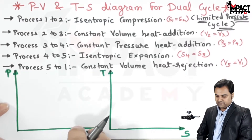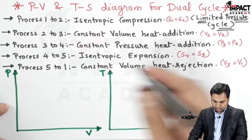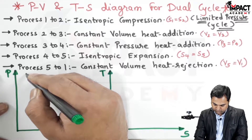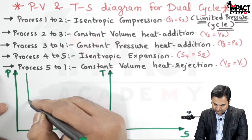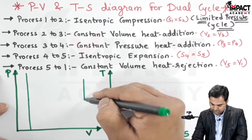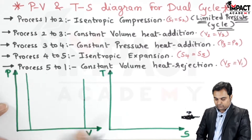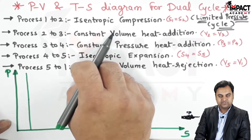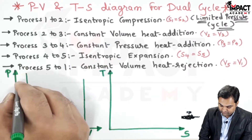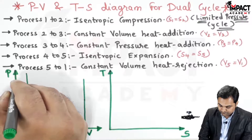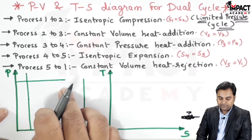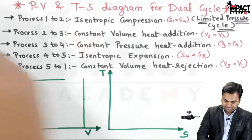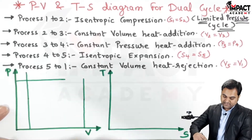Starting with the PV diagram — first draw two light vertical lines. These two vertical lines represent the constant volume processes. Then draw a light horizontal line, which would represent the constant pressure process. Then draw two parallel curves.